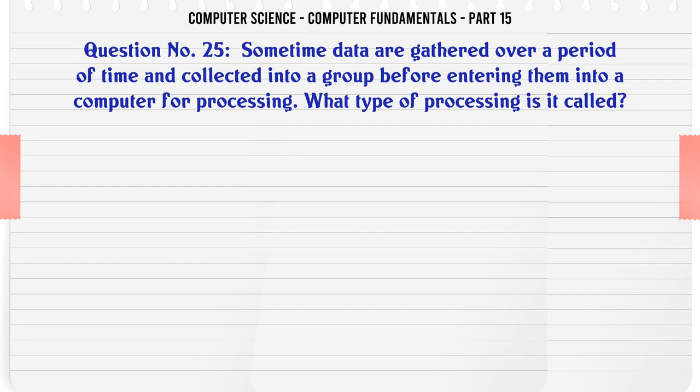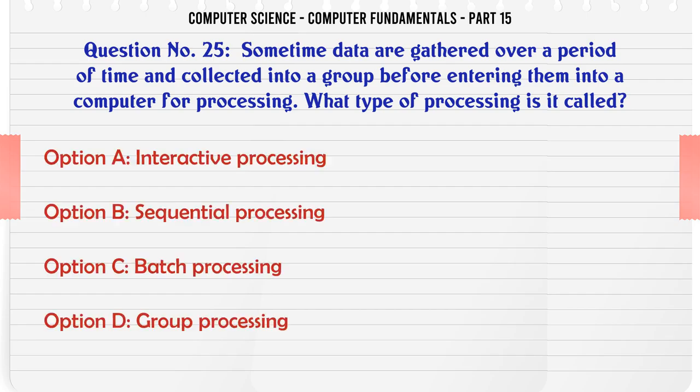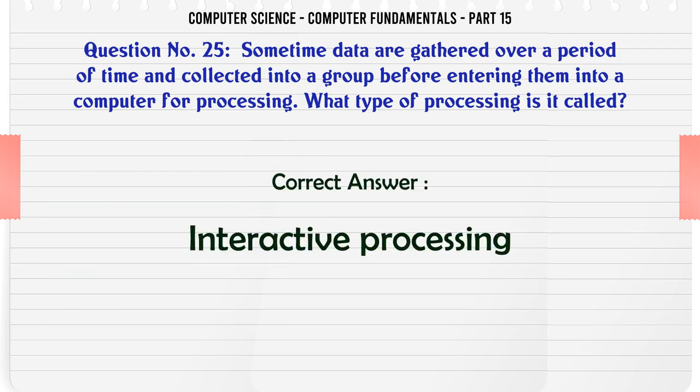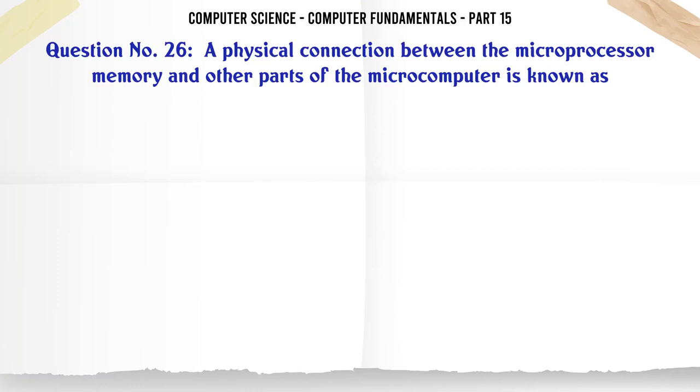Sometimes data are gathered over a period of time and collected into a group before entering them into a computer for processing. What type of processing is it called? A. Interactive Processing B. Sequential Processing C. Batch Processing D. Group Processing. The correct answer is Batch Processing.